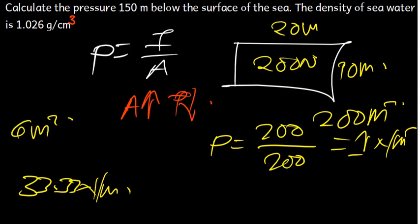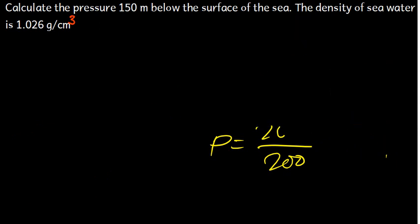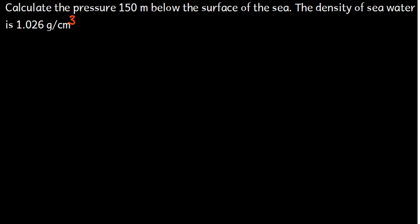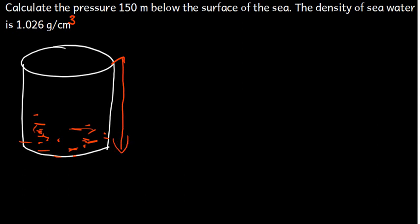Pressure is basically the force divided by the area. Now let's say we have a cylinder. Here is our cylinder, and inside it, let's say there is water. The height of the cylinder from bottom to top, let's call it H. Let's say there is a lid on top of the cylinder and it is closed.